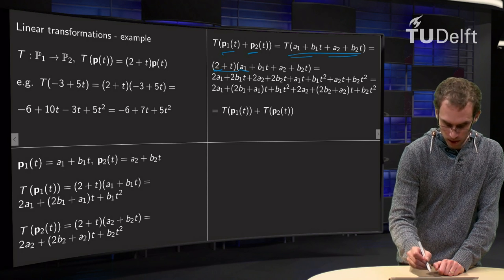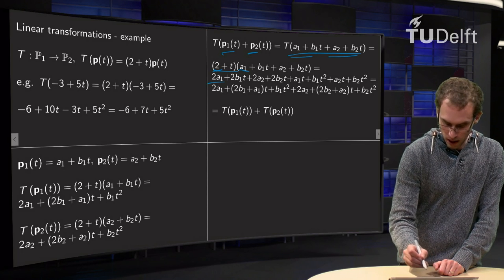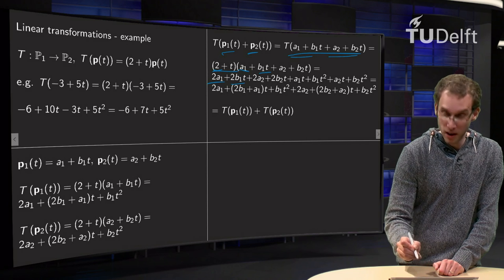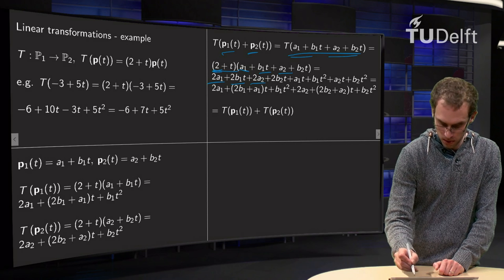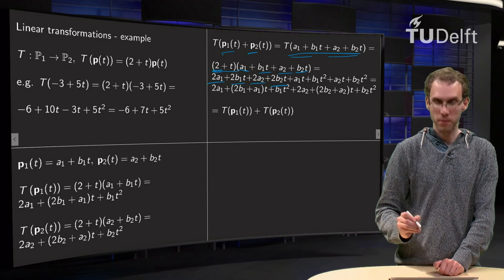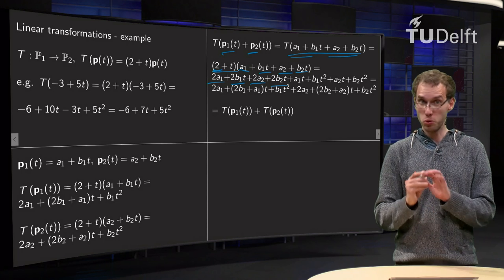So what do we get? 2 times a1 over here, 2 times b1 times t over here, 2 times a2 over there and 2 times b2t over there. So there we are, 2 is done.